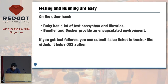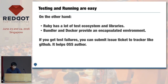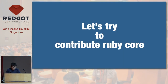On the other hand, testing and running code is easy. Ruby has a lot of test ecosystem and libraries, like Minitest, RSpec, and Capybara, etc. And now Bundler and Docker provide an encapsulated environment. If you get test failures, you can submit an issue ticket to their tracker. If test coverage is missing for some Ruby code, you can also write new tests and submit a patch. You can contribute to the Ruby language now.